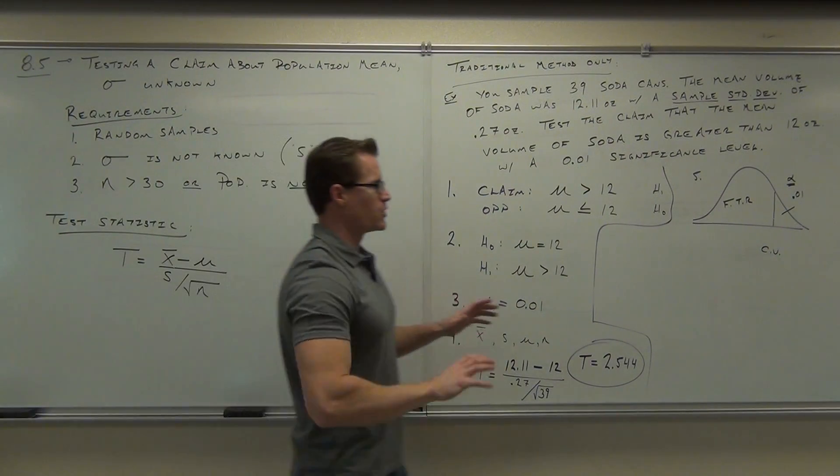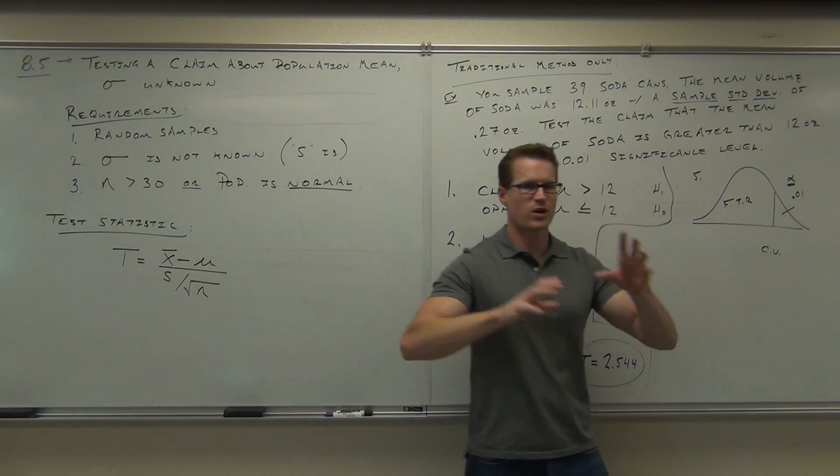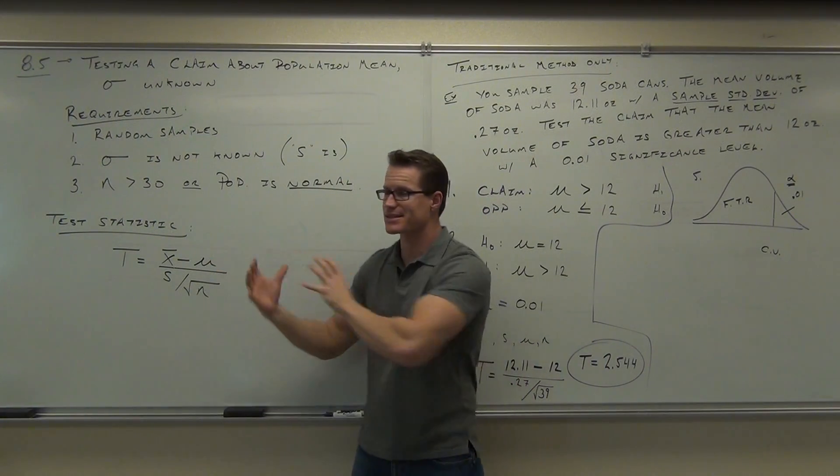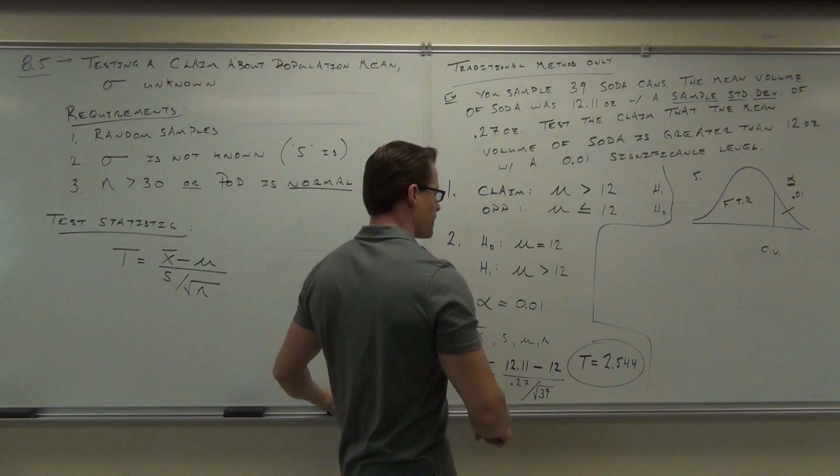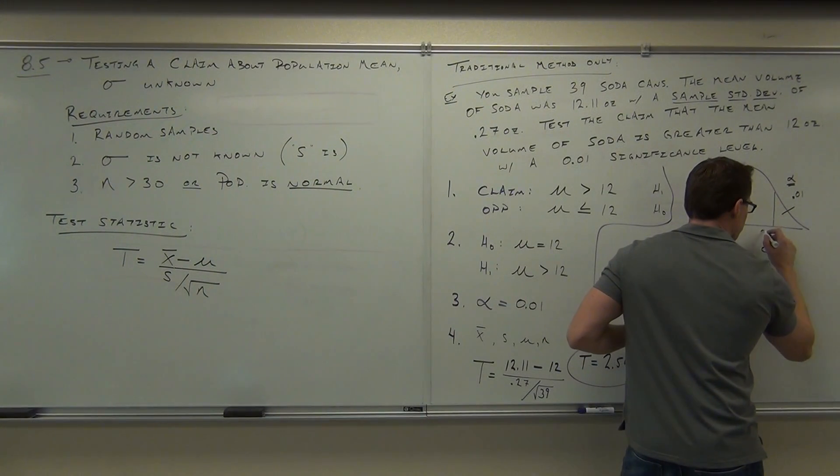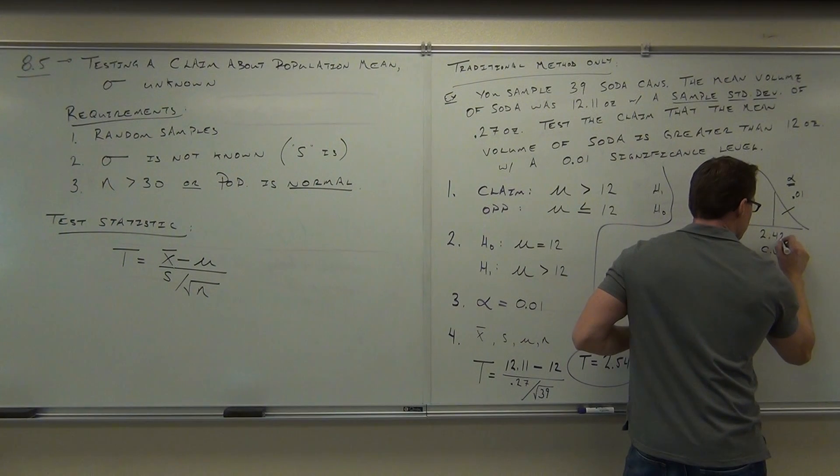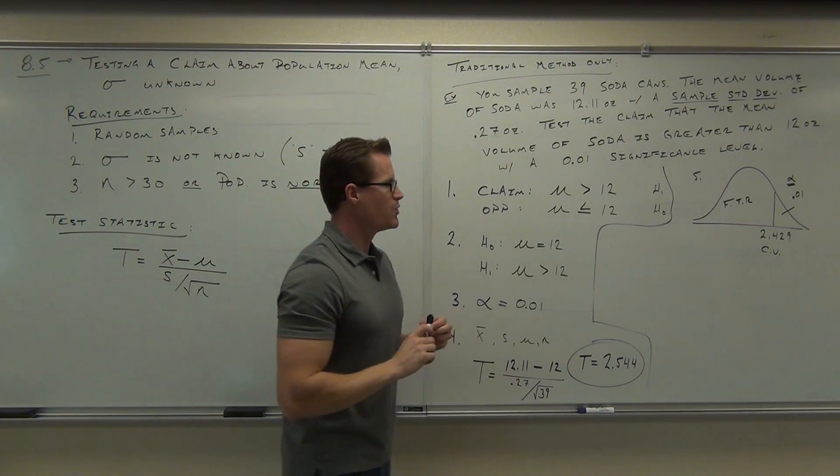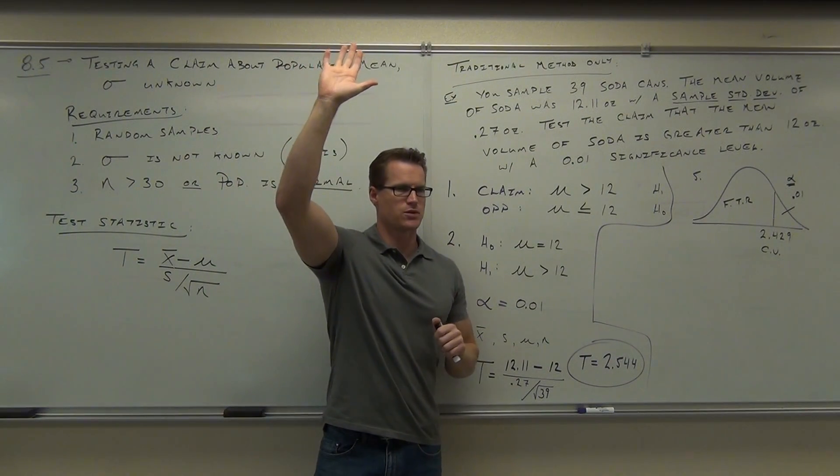So we use our t-distribution to go ahead and look up our alpha, depending on whether a left-tail or right-tail test, and find a critical value that we're going to test our test statistic against. 2.429. Would you raise your hand feel okay if I find the 2.429? Great.